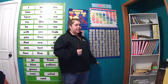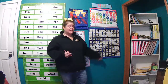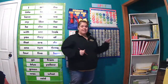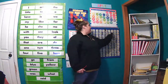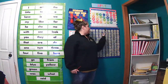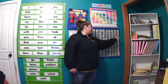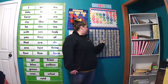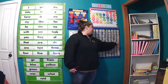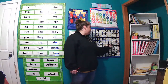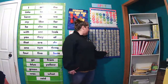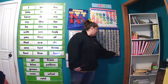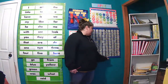Looking at our hundreds chart, we're going to go ahead and count these by fives — counting in the middle and at the end of each row. Can you count with me? 5, 10, 15, 20, 25, 30, 35, 40, 45, 50, 55, 60, 65, 70, 75, 80, 85, 90, 95, 100.